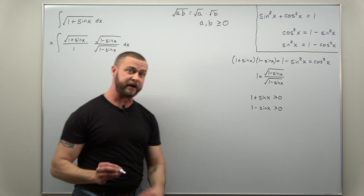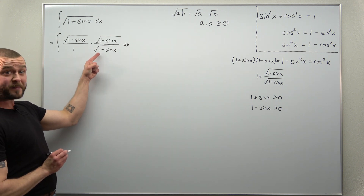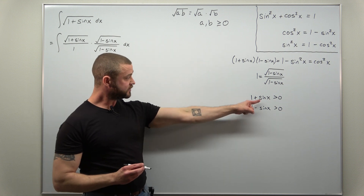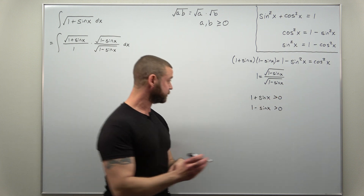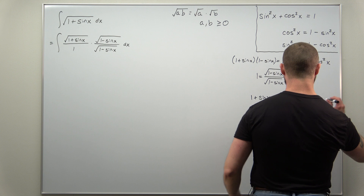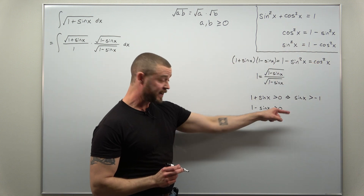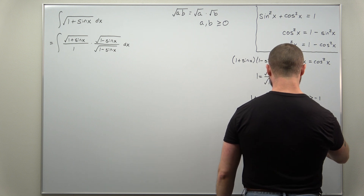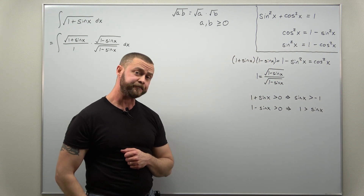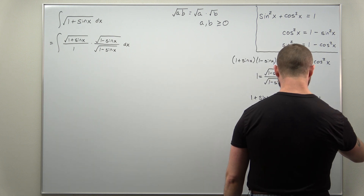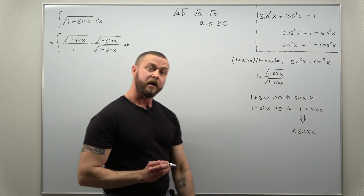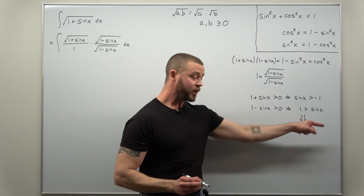We're making these strictly greater than zero since we have a factor of square root of one minus sine of x in the denominator — we don't want that to equal zero. The first inequality equivalently says sine of x is greater than negative one, and the second says sine of x is less than positive one. We can combine both of these: we want sine of x to be greater than negative one but less than positive one.